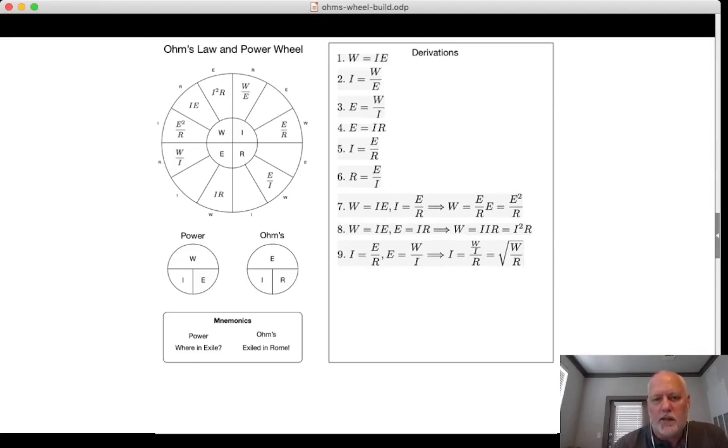So substituting in W over I for E, we get I is equal to W over I divided by R. Doing a little bit of manipulation algebra, we find that this is equivalent to W over IR. Multiply both sides by I. I squared is equal to W over R. Take the square root of both sides and we wind up with the square root of W over R is equal to I. And that becomes our next equation.